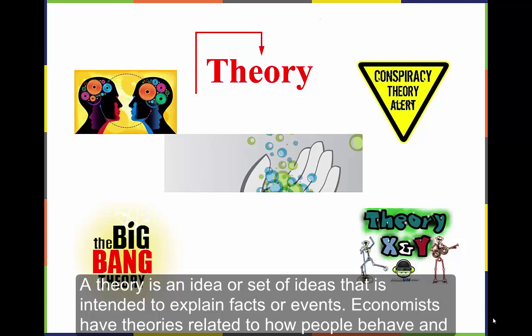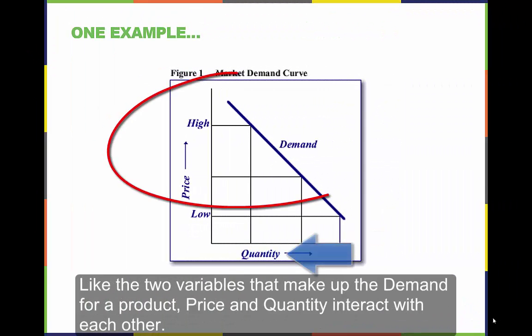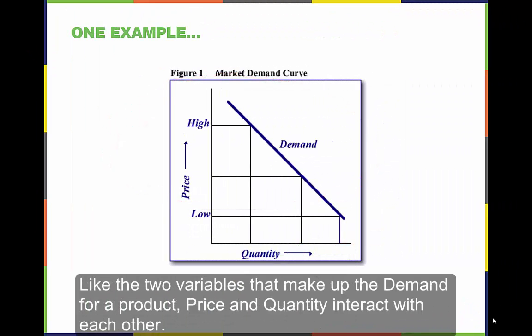Economists have theories related to how people behave and ultimately how the economy behaves. Economists use simplified theories to show how two or more variables interact, like the two variables that make up the demand for a product: price and quantity interact with each other.